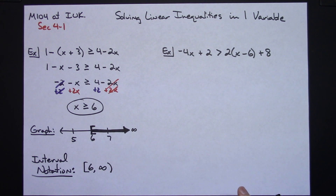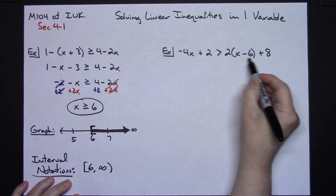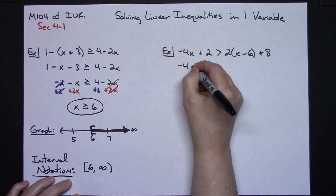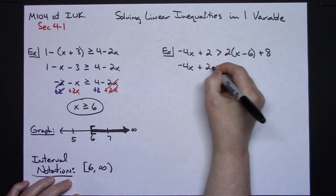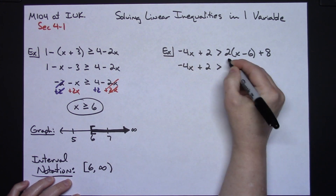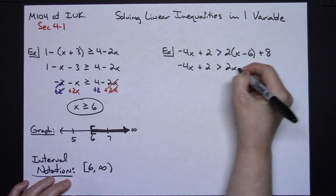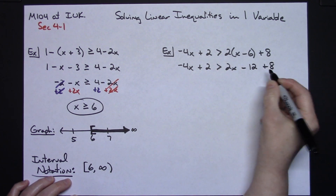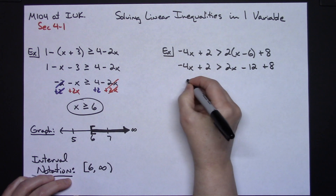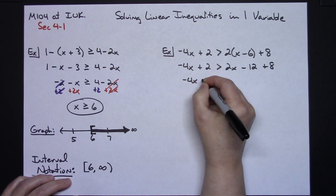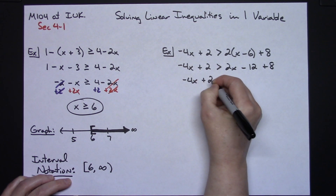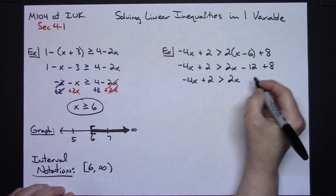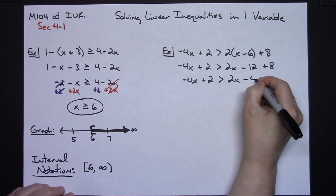Now let's go ahead and try this next one. Again, I see some distributive property on this right-hand side. So negative 4x plus 2 greater than, distributing that 2, 2x minus 12 and then plus 8. Now I can go ahead and combine some like terms: negative 4x plus 2 greater than 2x, and then negative 12 plus 8 is going to give me negative 4.